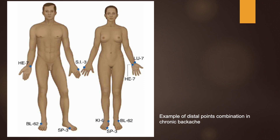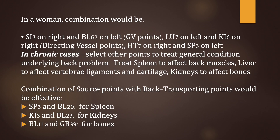An example combination of distal points for chronic backache stemming from the midline in a man: SI3 on the left and Bladder 62 on the right (governing vessel points); Heart 7 on the right and Spleen 3 on the left. This combination opens the governing vessel, removes obstructions, strengthens the kidneys and spine, expels wind, calms the mind, relieves spasm, and straightens the spine. After withdrawal of these points, local points could be used. In a woman, the combination would be SI3 on the right and Bladder 62 on the left (governing vessel); Lung 7 on the left and Kidney 6 on the right (directing vessel); Heart 7 on the right and Spleen 3 on the left. In chronic cases, it is important to treat the spleen for back muscles, the liver for vertebral ligaments and cartilage, and the kidneys for the bones. Effective combinations include Spleen 3 and Bladder 20 for the spleen; Kidney 3 and Bladder 23 for the kidneys; Bladder 11 and GB39 for the bones.